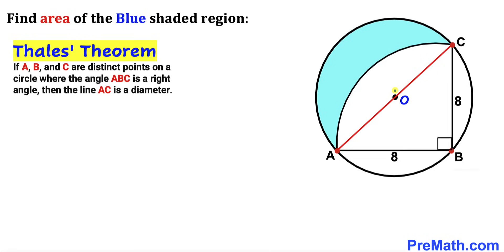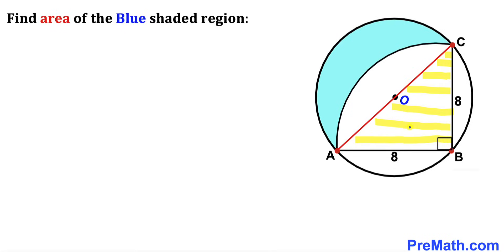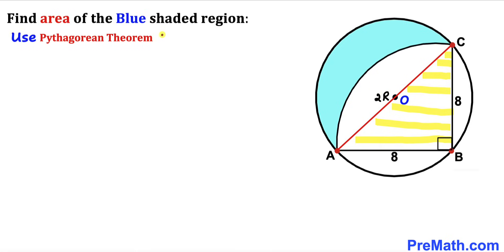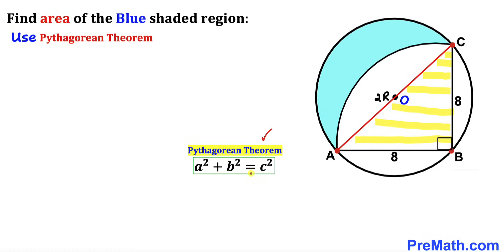In other words, this line passes through center O. Now let's focus on right triangle ABC. Let me label the radius of the big circle as uppercase R on both sides, so the whole diameter is R plus R, which equals 2R. Now let's apply the Pythagorean theorem — A² + B² = C².